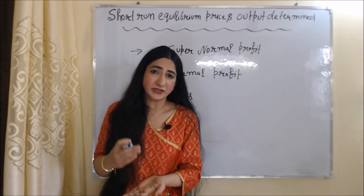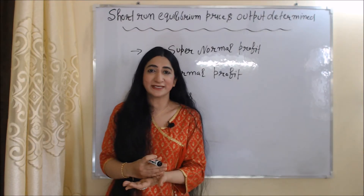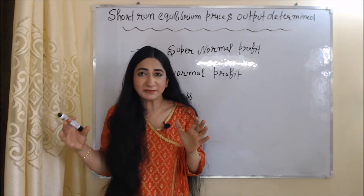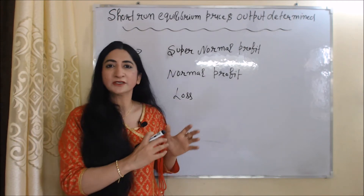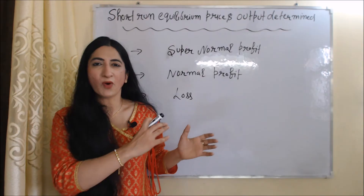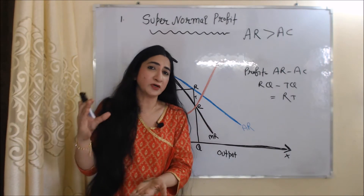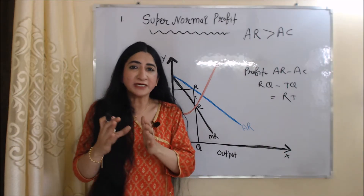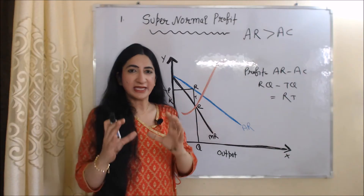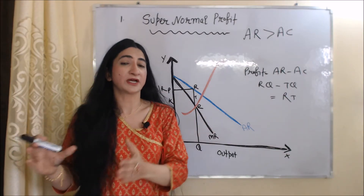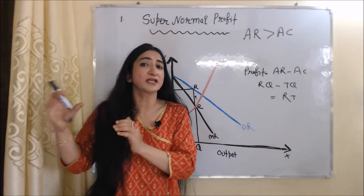Now we are going to talk about short run equilibrium and how price and output are determined under monopolistic competition. In the short run, a firm can basically have three kinds of equilibrium: super normal profit, normal profit, and loss. We will discuss each one by one. Firstly, a firm gets super normal profit when AR is more than AC — that is, when average revenue is more than average cost.